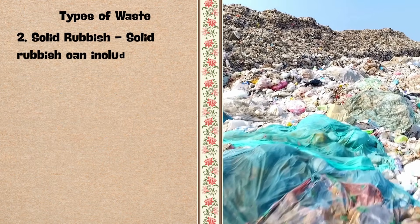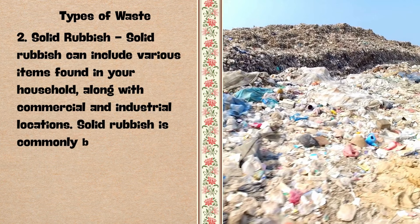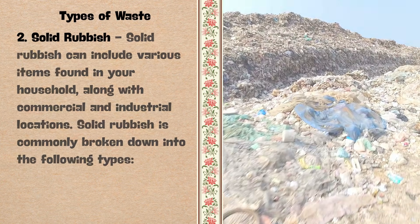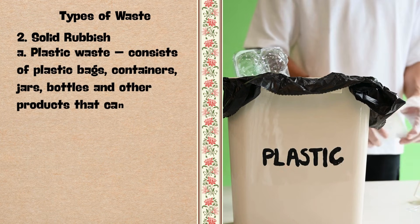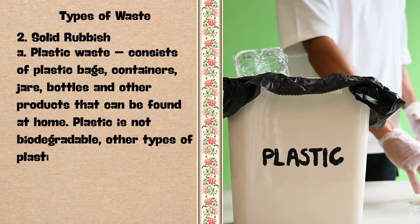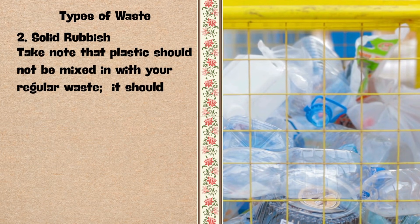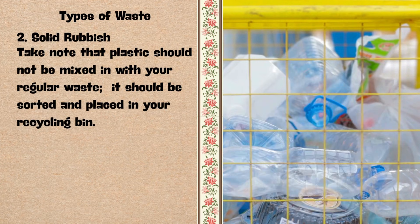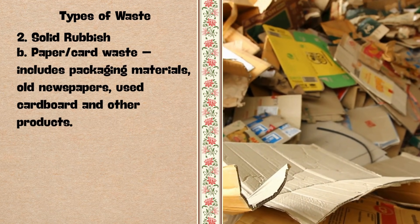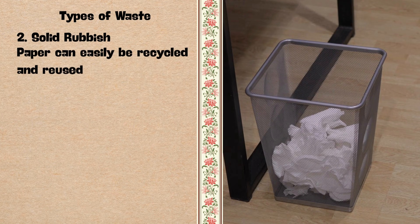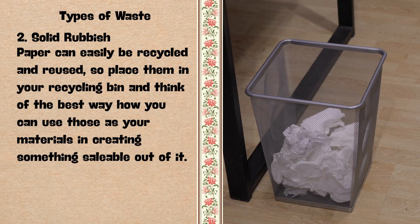2. Solid rubbish — it can include various items found in your household, along with commercial and industrial locations. It is commonly broken down into the following types: First, plastic waste — it consists of plastic bags, containers, jars, bottles, and other products. Plastic is not biodegradable, though some types can be recycled. Plastic should not be mixed with regular waste; it should be sorted and placed in your recycling bin. Second, paper or card waste — it includes packaging materials, old newspapers, used cardboard, and other products. Paper can easily be recycled and reused, so place them in your recycling bin and think of the best way to create something saleable out of it.